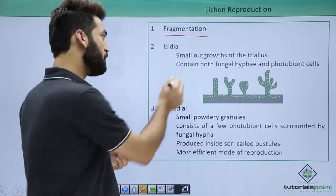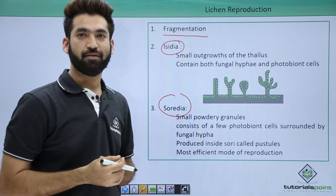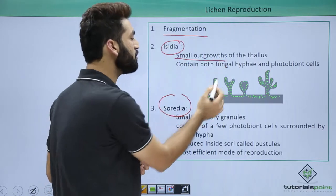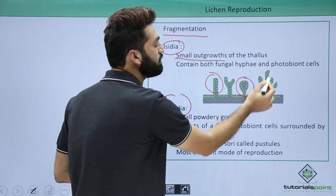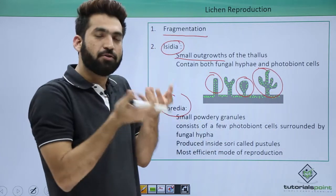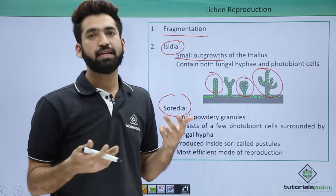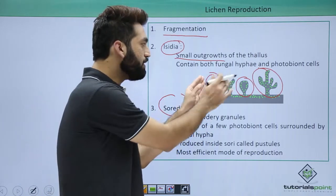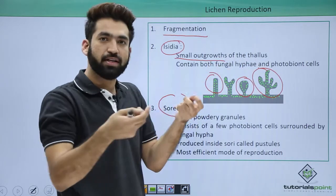Two important structures in lichen reproduction are isidia and soridia, which are important for exams. Isidia are small outgrowths — they are basically responsible for increasing the surface area, but they are also responsible for reproduction in lichen.